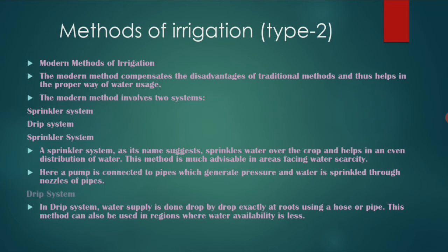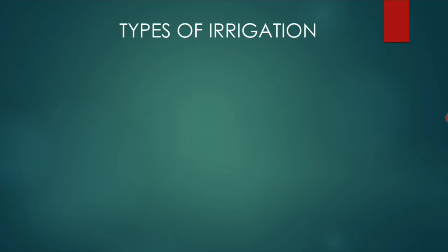In drip irrigation, there are pipelines situated near the roots of the plant, so drop by drop the water reaches the roots. This method is used in regions where water availability is very less.